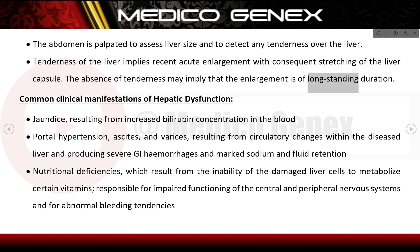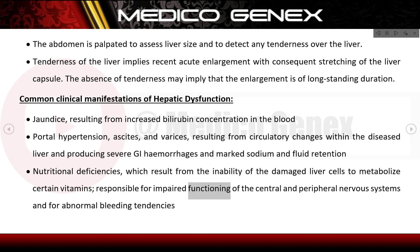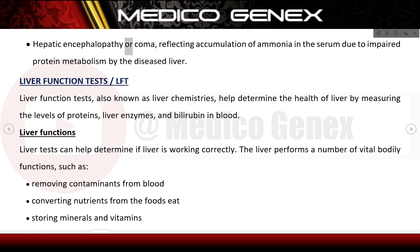Tenderness of the liver implies recent acute enlargement with stretching of the liver capsule; absence of tenderness may imply long-standing enlargement. Common clinical manifestations of hepatic dysfunction include jaundice from increased bilirubin, portal hypertension with ascites and varices causing GI hemorrhage and sodium retention, nutritional deficiencies from impaired vitamin metabolism causing nervous system dysfunction and abnormal bleeding tendencies, and hepatic encephalopathy reflecting ammonia accumulation due to impaired protein metabolism.